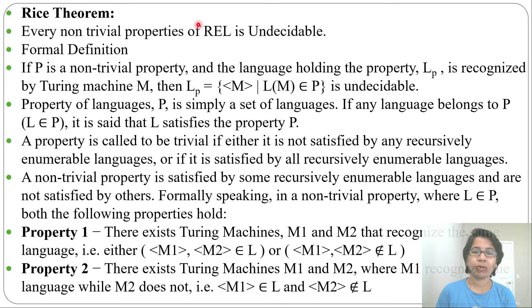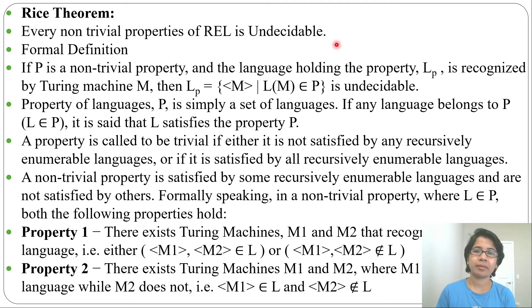You don't need to go in deep about Rice's theorem. Just know this statement: every non-trivial property of a recursively enumerable language is undecidable. A non-trivial property is one satisfied by some Turing machines but not others. If it is satisfied by all or none, that is trivial. If satisfied by some, it is non-trivial — and all non-trivial properties are undecidable.